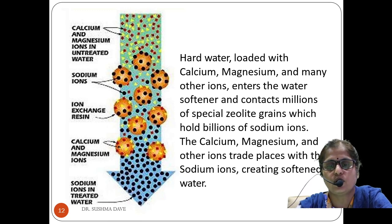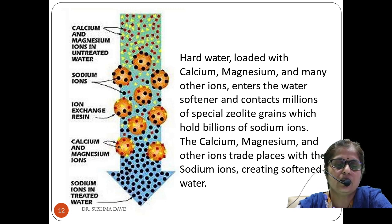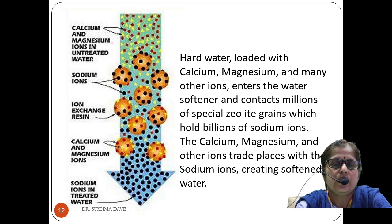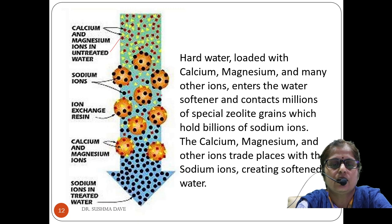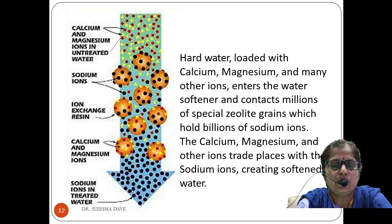To understand broadly how hardness is removed from water using zeolite, consider the figure shown in the slide. The calcium and magnesium ions are present in untreated water, and the black dots represent the active sites of zeolite. The calcium and magnesium are replaced by sodium ions, so in treated water the sodium ions come out while calcium ions are retained in the zeolite as exhaust.